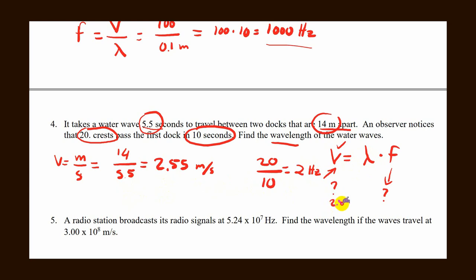So plug that into what we know. 2.55 equals wavelength multiplied by frequency, which is 2. To find the wavelength, divide both sides by 2. So 1.27, and the units would be meters.